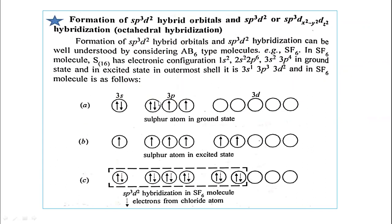Now let us explain the formation of SP3d2 hybrid orbitals and SP3d2 hybridization. SP3d2 means two d orbitals are involved in bonding, giving six hybrid orbitals from 1s, 3p, and 2d orbitals. This is explained by the AB6 type molecule: sulfur hexafluoride, SF6, which is the best example to explain SP3d2 hybridization.